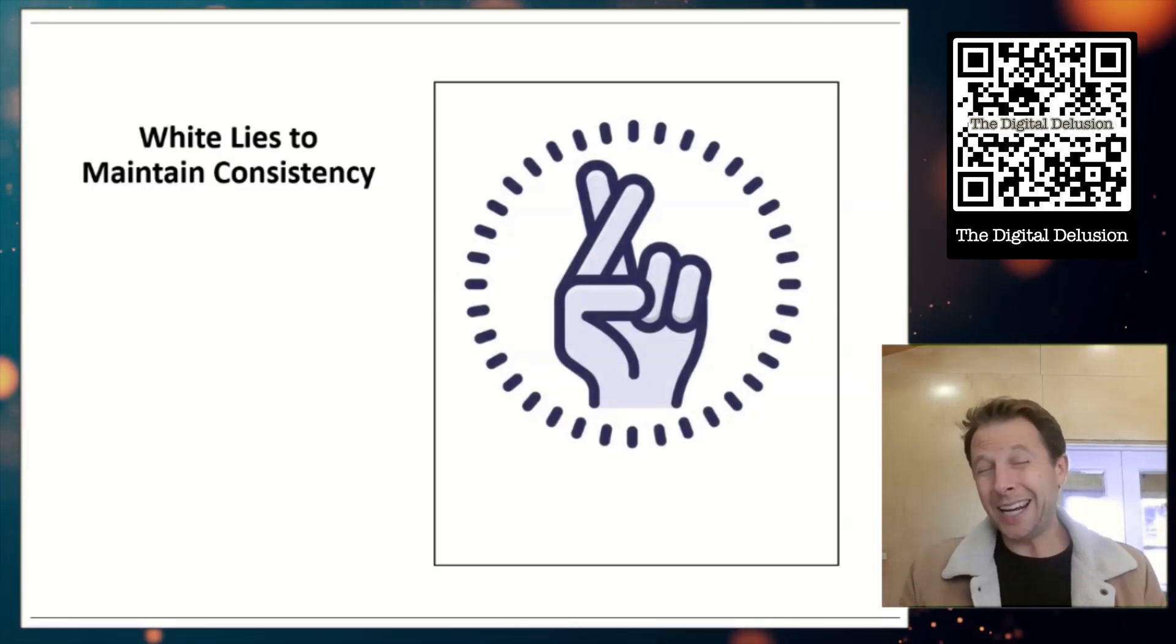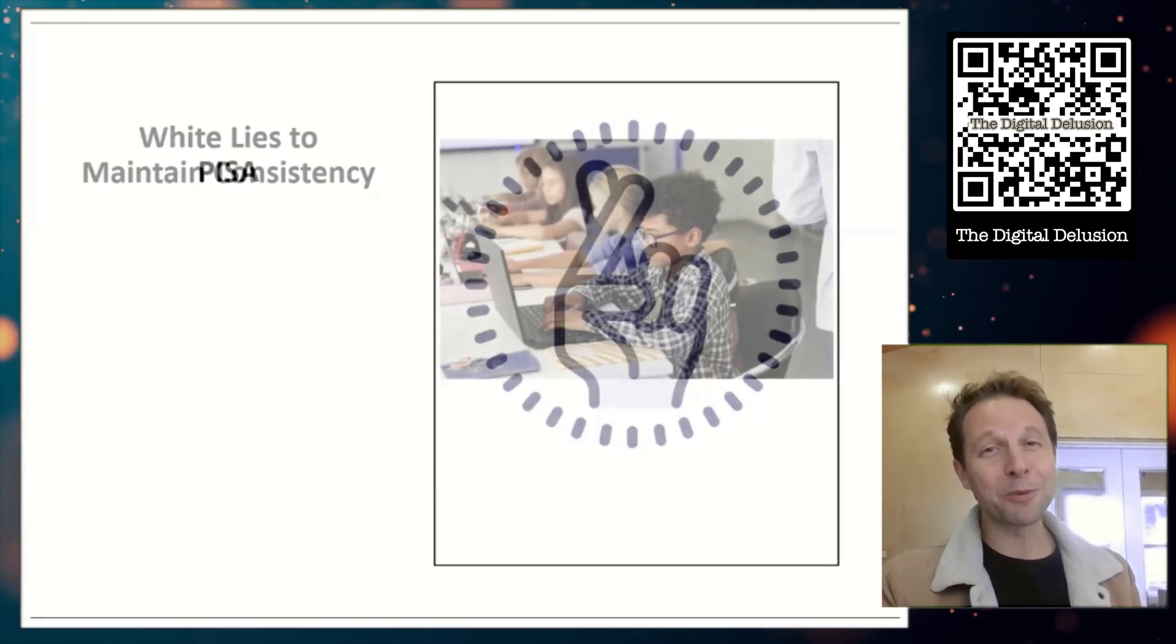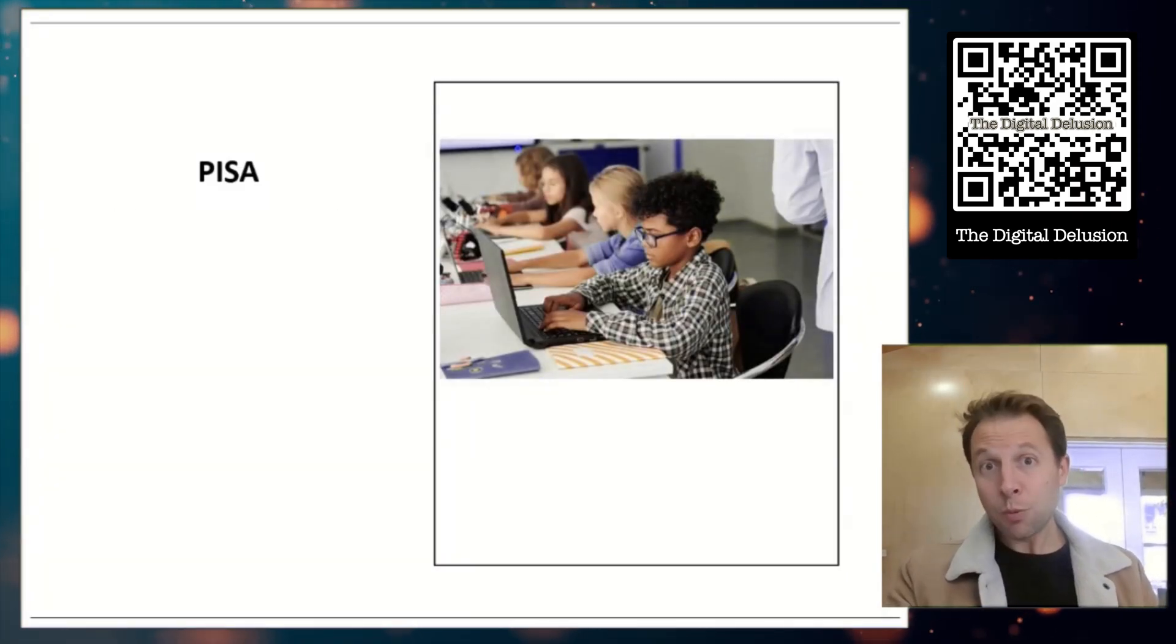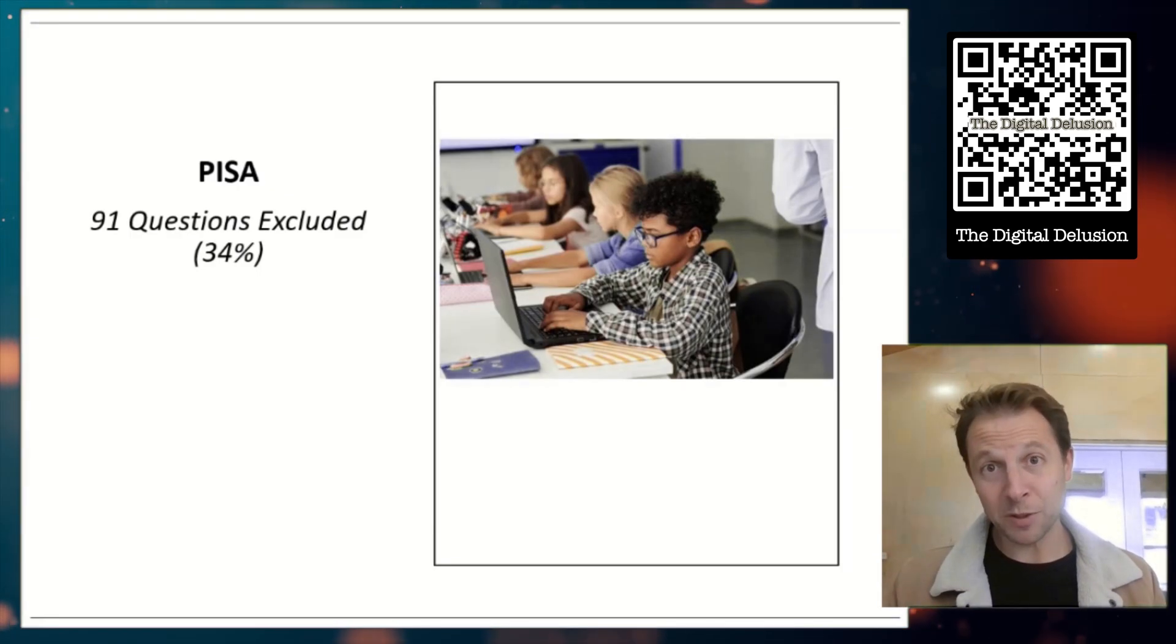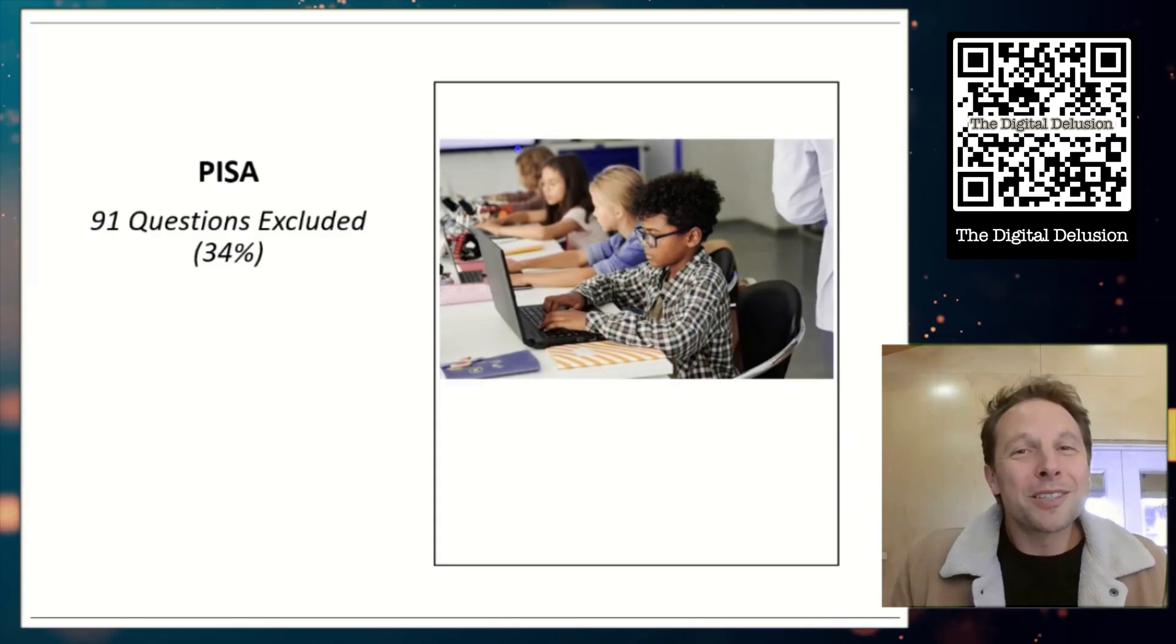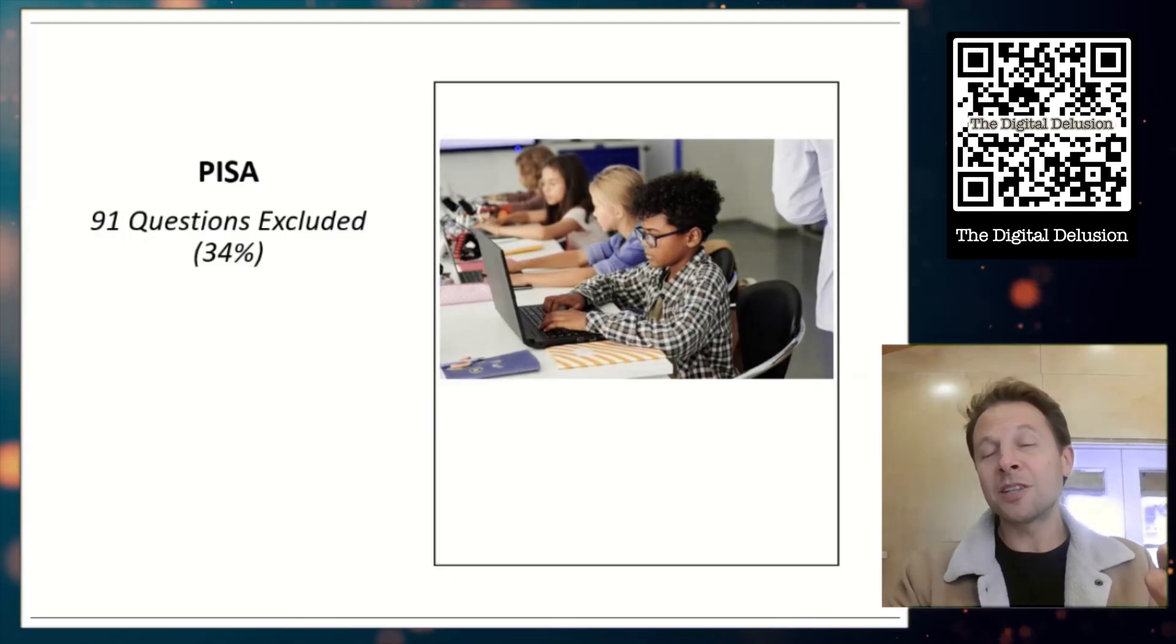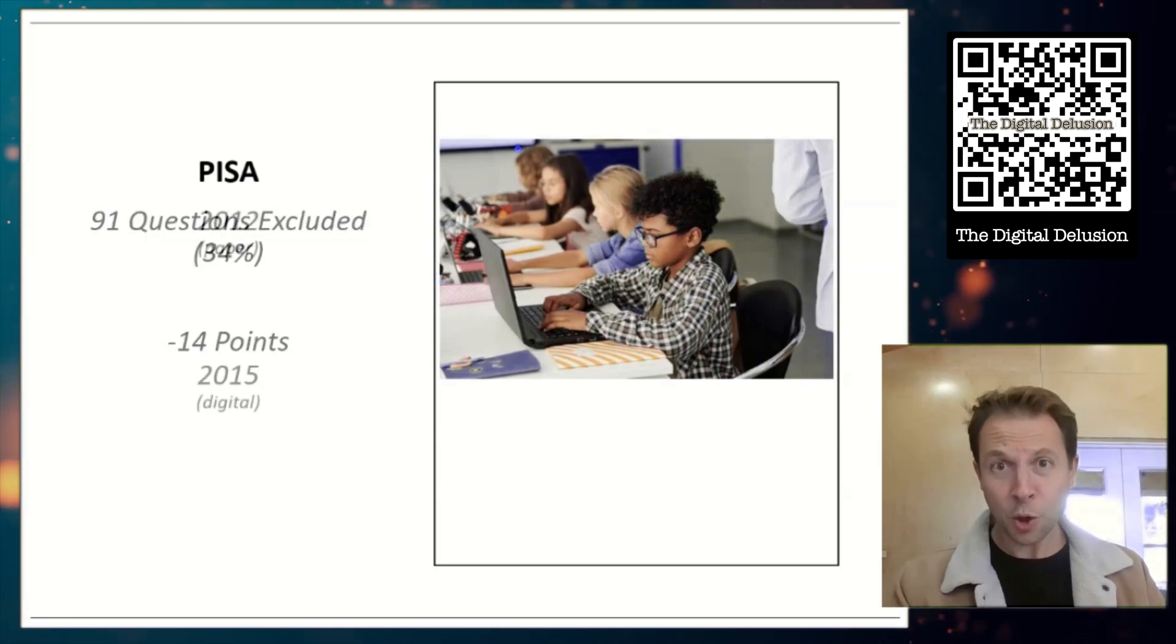Now, the trick is people who create tests do everything they can to hide their re-norming procedures. They do not want people to know this is going on and it is very hard to suss out how it works. But luckily, some intrepid researchers have done some digging and they were able to find some stuff out. So let's go back to PISA. When PISA made the jump from paper to digital, kids performed significantly worse on 91 questions when it was presented on a screen. That is 34% of the exam. So what did they do? They simply erased these questions. Kids had to answer them, but they didn't include them in the scoring. They just threw them away.